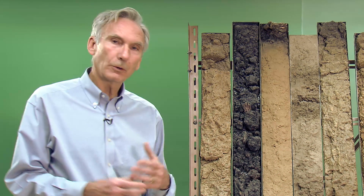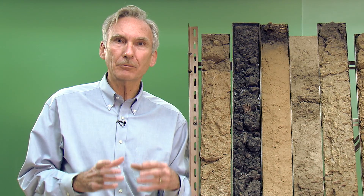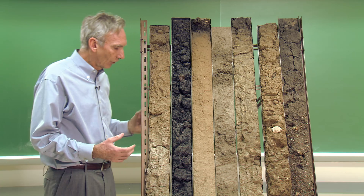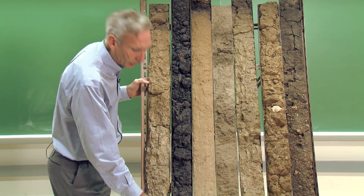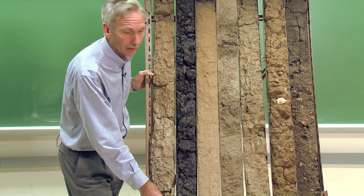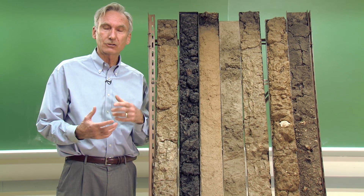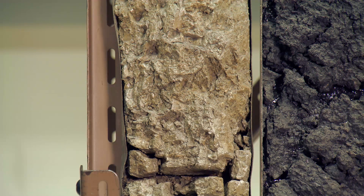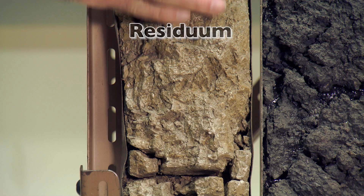We're going to focus in on just parent materials and show you the different parent material types that we have here in the state of Indiana. The first monolith we have here has shale down at the very bottom, and this soil has actually developed from that shaly type of parent material. This material is referred to as residuum or residual parent material.